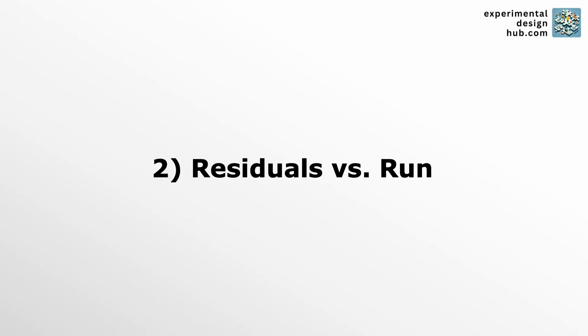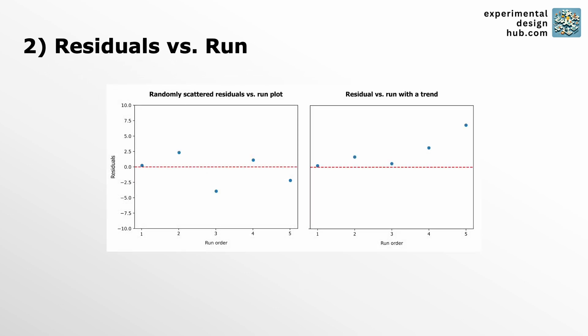The residuals versus run plot looks at your residuals over the sequence in which your experiments were run. Again, a random scatter is what you're looking for. If you notice any trends in this plot, it might mean that there's a time-related effect going on, like temperature shifts during the experiment.